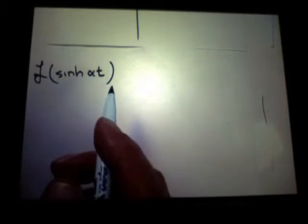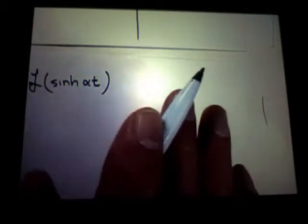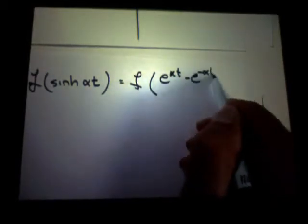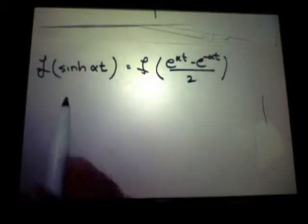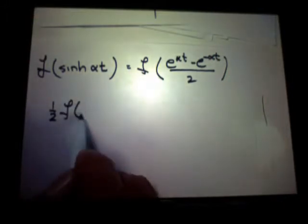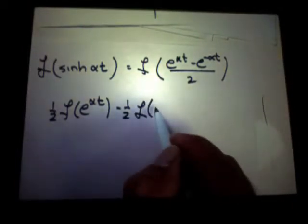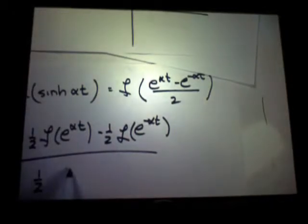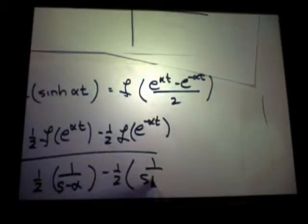Can we piggyback on what we already know? Let's assume the linearity, we'll prove that as a separate issue, but this is really e to the alpha t minus e to the minus alpha t over 2, right? So assuming the linearity, it's one half e to the alpha t minus one half e to the minus alpha t. So go get the formulas for e to the alpha t, there they are: 1 over s minus alpha. And you have one half times one over s minus alpha, minus one half, one over s plus alpha.